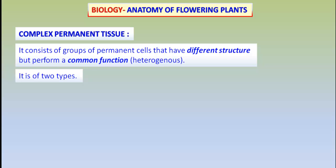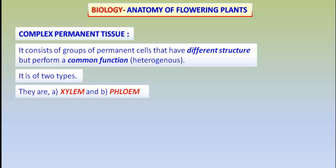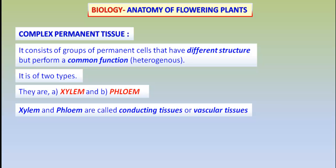The Complex Permanent Tissues are of two types in plants: xylem and phloem. The xylem and phloem together perform all kinds of transportation within the plant, and hence they are called Conducting Tissues or Vascular Tissues.